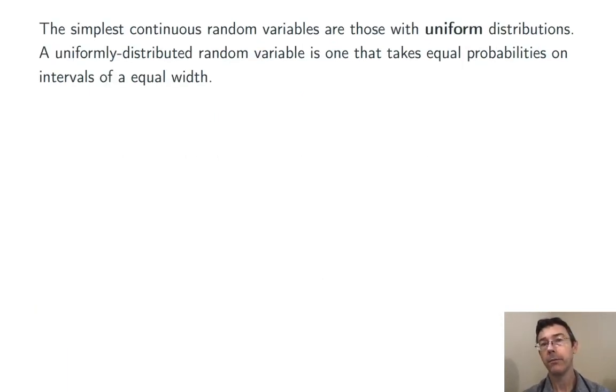The simplest continuous random variables are those with uniform distributions. A uniformly distributed random variable is just one that takes equal probabilities on intervals of equal width. Roughly speaking, you're thinking of it as meaning that every value of x in a particular range is equally likely.